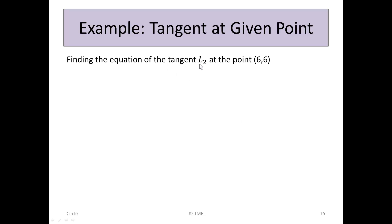We're asked to find the equation of the tangent L₂ at the point (6, 6), but we want the equation of the tangent. Now, to find the equation of a line, we need to use the formula. But the data we have, we have a data point (6, 6), so x₁, y₁ can be (6, 6). We also know the slope of the line is M₂, or -4/3.